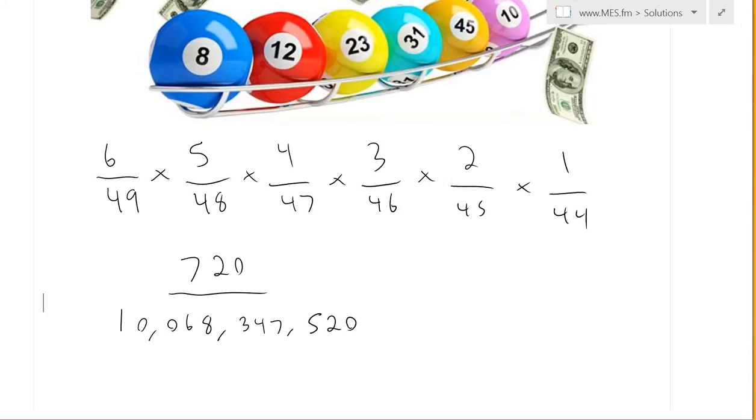720 divided by... This is 10 billion down here. So, what this means is that for every 720 times you win, you're going to be playing a total of 10 billion times.